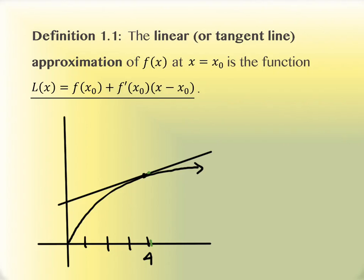This definition is actually the definition for linear approximation. The linear approximation of a function f(x) at x equals x₀ is the function L(x) = f(x₀) — in our example that was the square root of 4, which is 2 — plus f'(x₀), which is the slope of the tangent line from the derivative, times (x − x₀). In our case that was (x − 4). If we want the value at 4.1, we substitute that in for x.